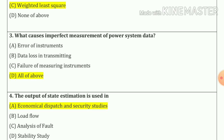Question number 3: What causes imperfect measurement of power system data? Our answer is: option a — error of instrument; option b — data loss in transmitting; option c — failure of measuring instrument. So our answer is all of the above, option number d.